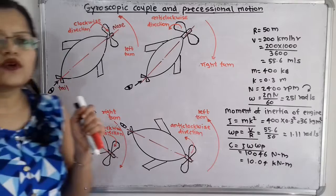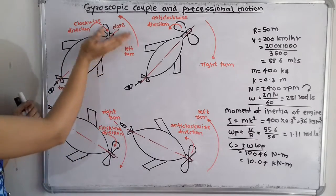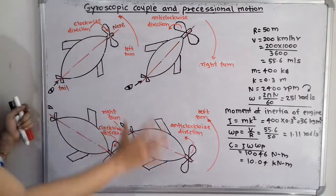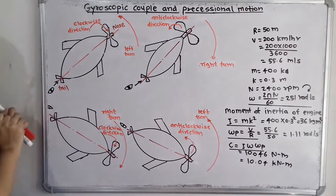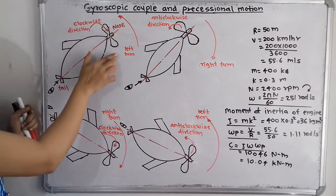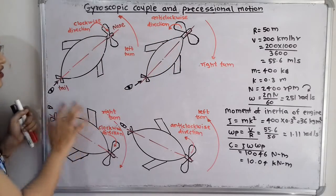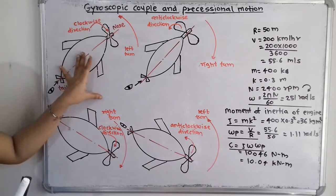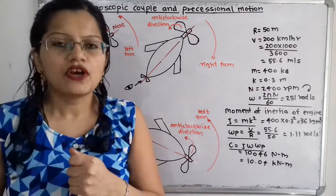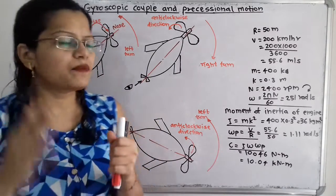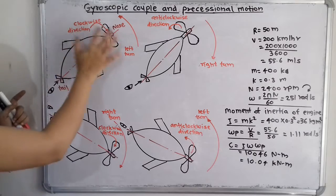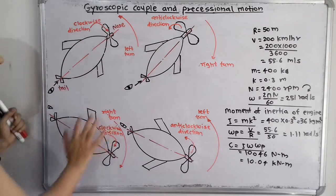There are two possibilities: the propeller is rotating in clockwise or anticlockwise direction. There are also two possibilities for the plane — taking a turn towards the left hand side or towards the right hand side. That means there are four possibilities when the observer is observing from the rear end. We have to find out the exact position for this nose and for this tail, as there are different positions for different conditions. These four diagrams are important.